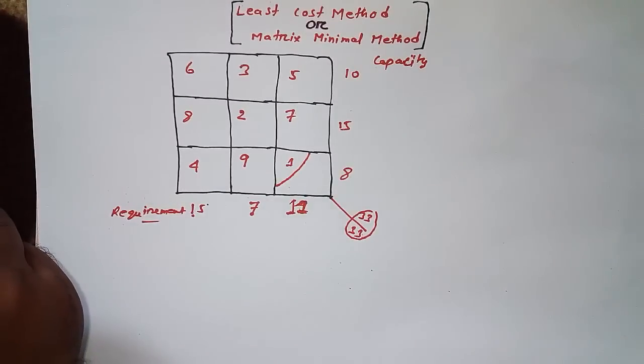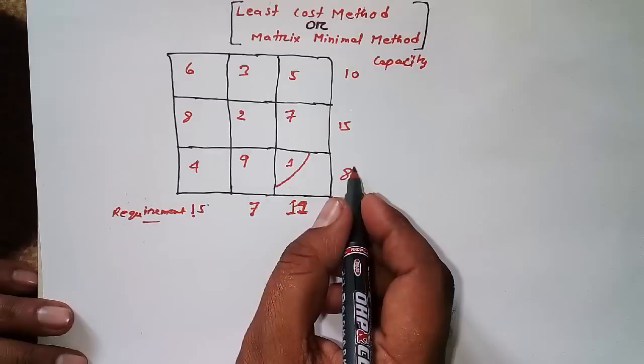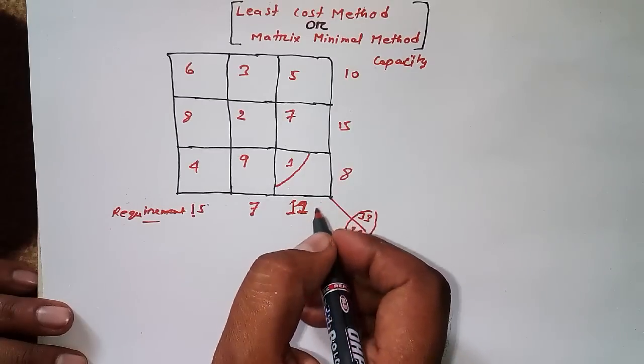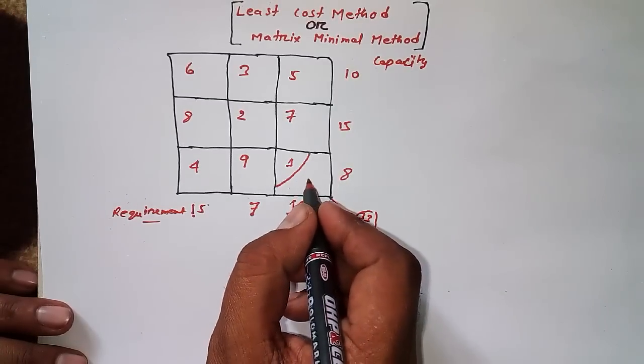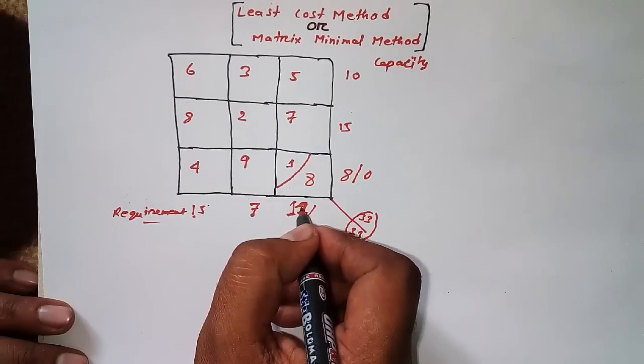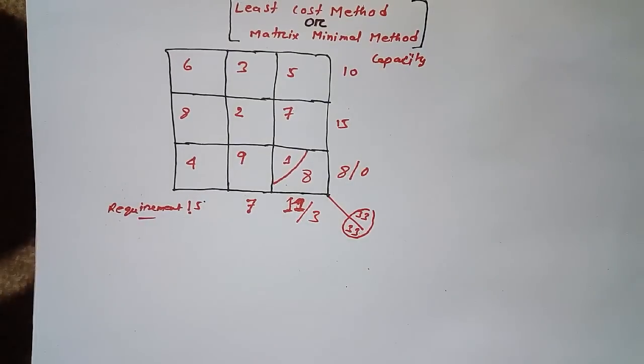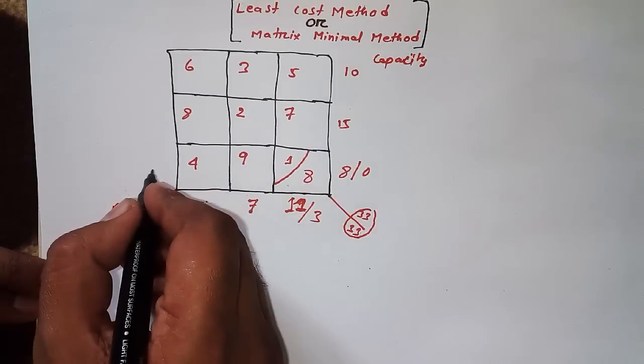Here we have a requirement of 11 and capacity of 8. We can only fulfill up to 8, so capacity becomes 0 and 11 minus 8 is 3 remaining. Since I'm done with this row, I don't need to look at it anymore.